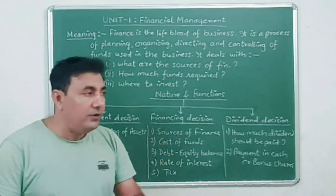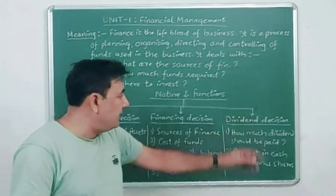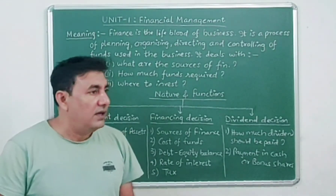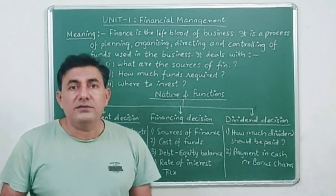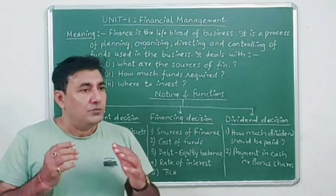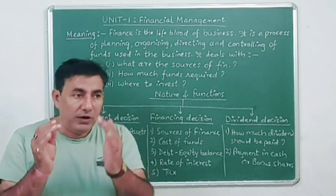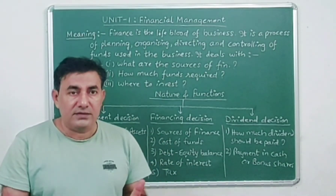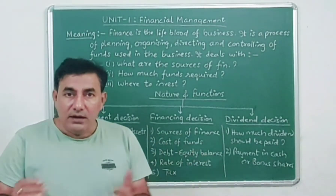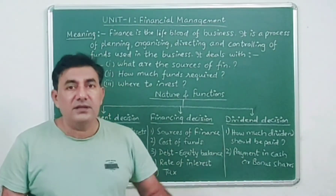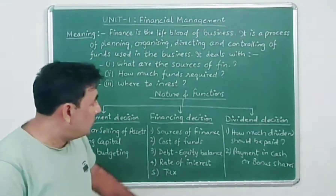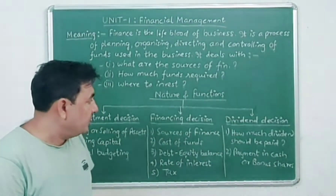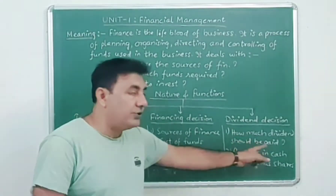You must learn all these points. Then comes dividend decision. Dividend is the earning of the shareholders. When a company earns sufficient profit, one part of the profit is included in retained earnings and the other part is distributed as dividend among the shareholders. This is an important decision to be taken by the financial manager — like how much dividend should you pay.